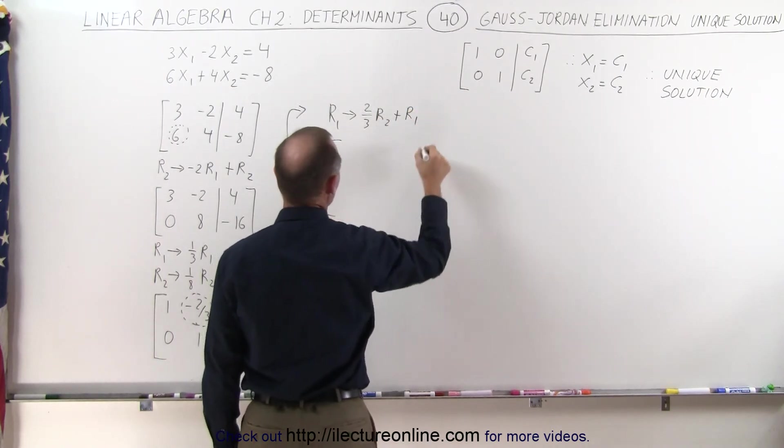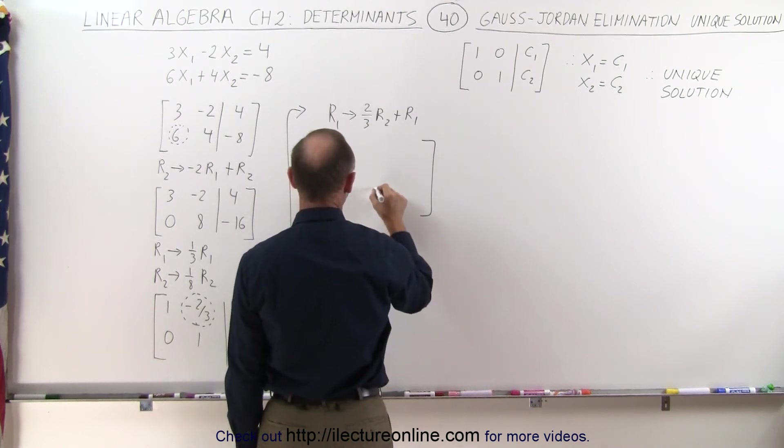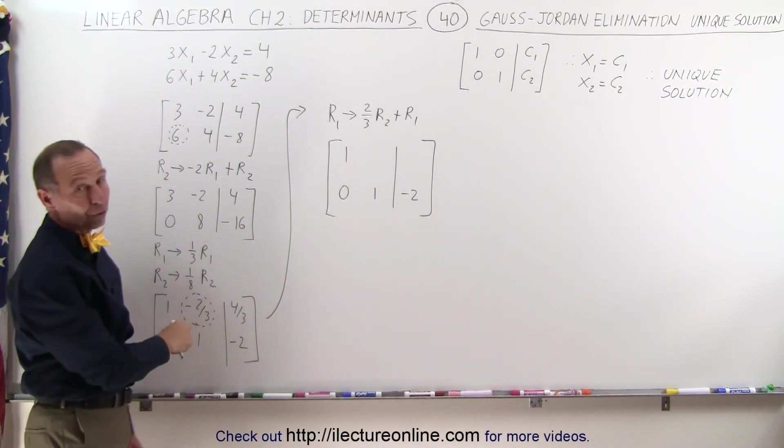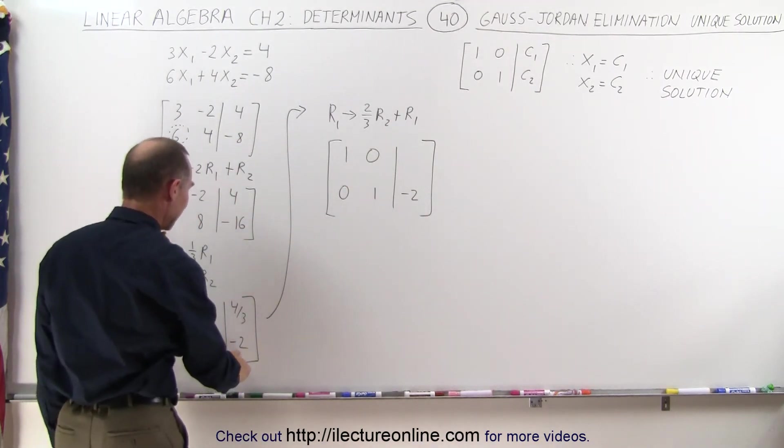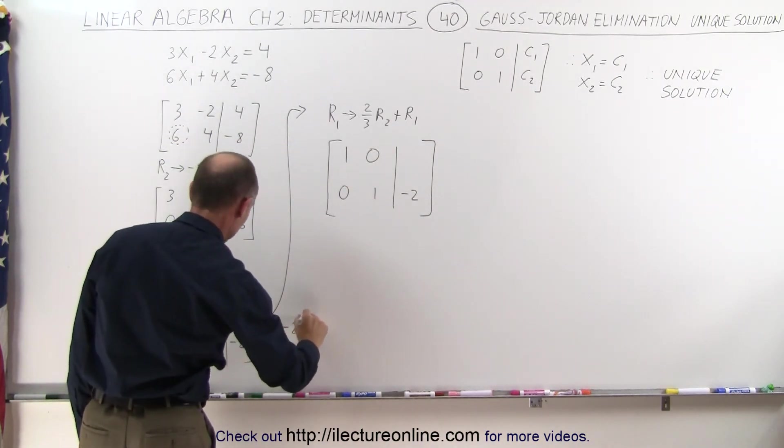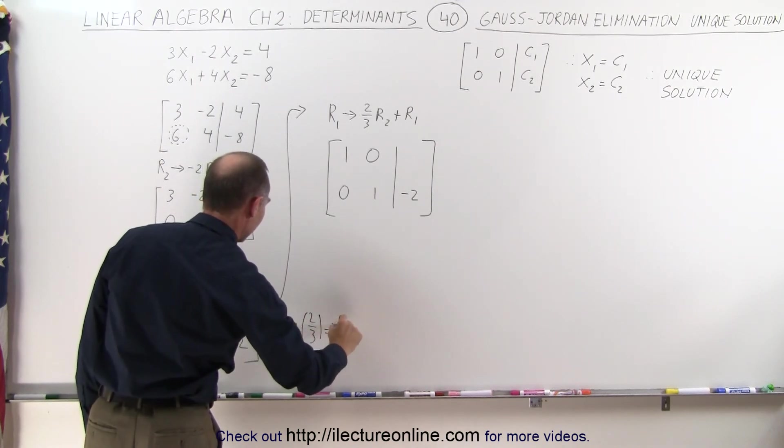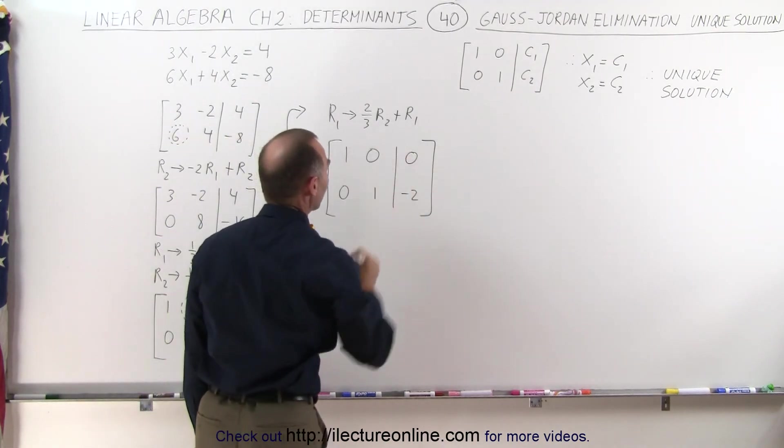When we do that, we get the following matrix. Notice that the second row doesn't change: 0, 1, and negative 2. The first row had 1 there, and 2/3 times 1 added to negative 2/3 is a 0. And 2/3 times negative 2, so negative 2 times positive 2/3 is negative 4/3, and we're going to add that to positive 4/3, which gives us a 0.